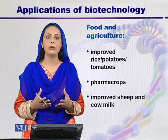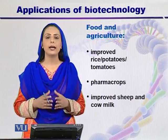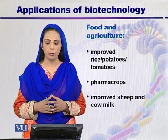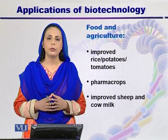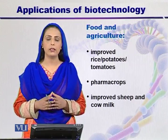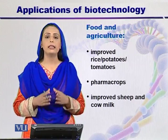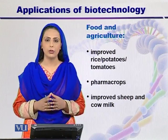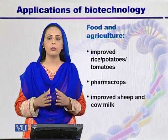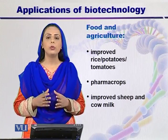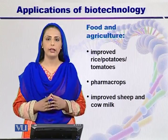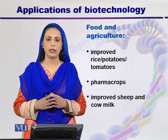We can improve the nutritional value in potatoes by increasing the protein level. In the same way, we can help treat anemia and diarrhea in infants. Nowadays most research is focused on pharma crops, because genetically modified food has caused allergies in human beings, so scientists are giving more stress on pharma crops — these are crops that can produce pharmaceuticals and avoid releasing allergy-causing molecules into the body. We can also improve sheep and cow milk by adding therapeutic proteins. This is how biotechnology is applied in food and agriculture.